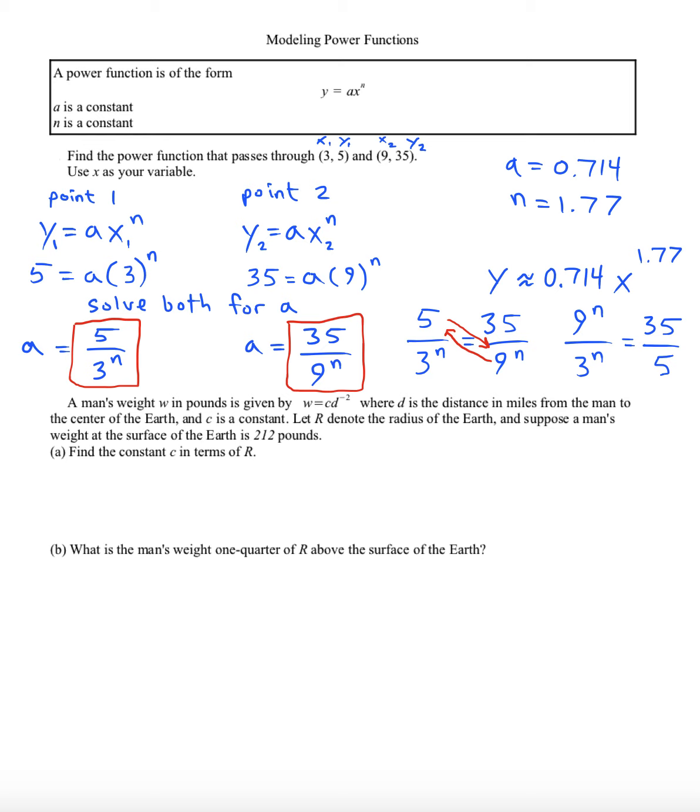At this point I'll try this next one here. This is also a power function because we've got a variable raised to a power. It says a man's weight w in pounds is given by w equals cd to the negative two, where d is the distance in miles from the man to the center of the earth and c is some constant. Let r represent the radius of the earth and suppose the man's weight at the surface of earth is 212 pounds. Can you find the constant in terms of r?